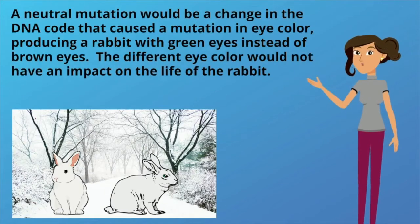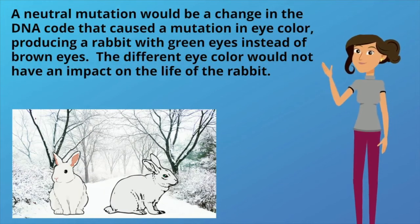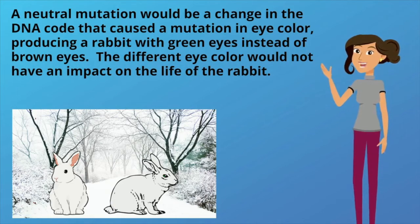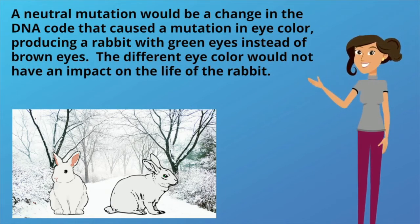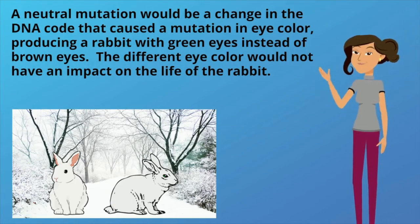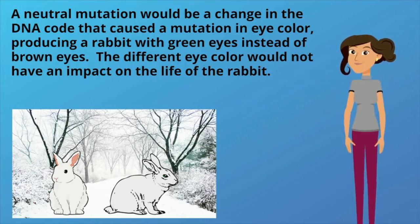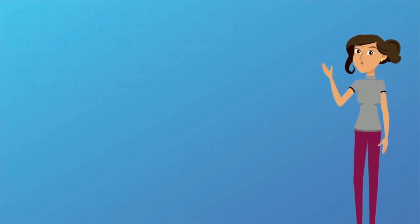A neutral mutation would be a change in the DNA code that caused a mutation in eye color, producing a rabbit with green eyes instead of brown eyes. The different eye color would not have an impact on the life of the rabbit.